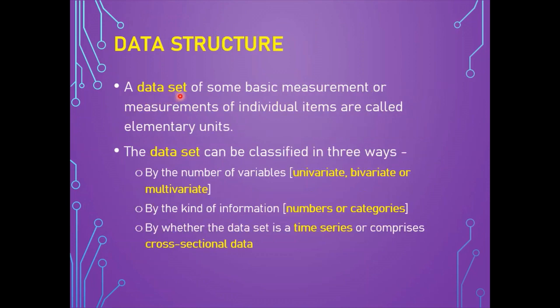A dataset of basic measurements of individual items are called elementary units, which may refer to people, households, farms, cities, TV sets, etc. The same piece of information is recorded for each one. A piece of information recorded for every item is called a variable. The dataset can be classified majorly in three ways: on the basis of the number of variables — univariate, bivariate, or multivariate.